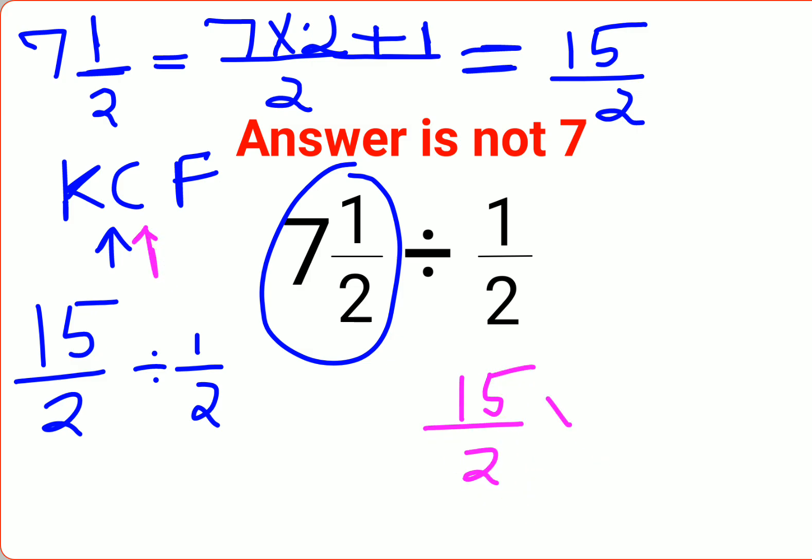F stands for flipping or taking the reciprocal of 1/2, which is 2. So this and this gets cancelled, so the answer for this question is just 15. I hope this is very clear to everyone. That's it for today, I will see you in the next video.